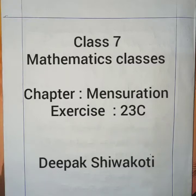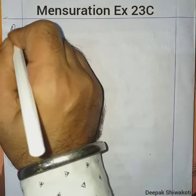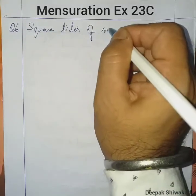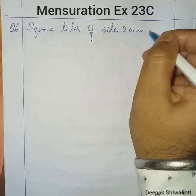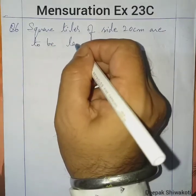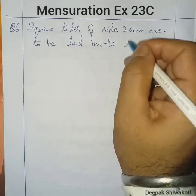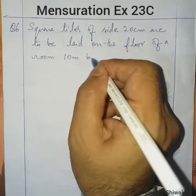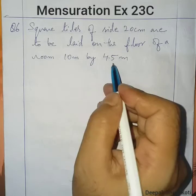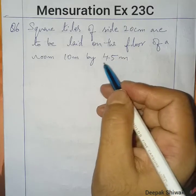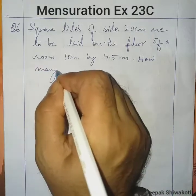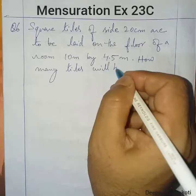Welcome to class 7 mathematics classes. We are in exercise 23C, chapter Mensuration, question number 6. Square tiles of side 20 cm are to be laid on the floor of a room 10 meters by 4.5 meters. This is the length and this is the breadth of the room. The question is: how many tiles will be needed?